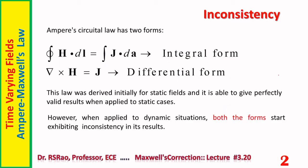Ampere's circular law is normally introduced to students when they study magnetic fields. Like several other laws, this law has both integral form and differential form. The integral form states that the MMF around a closed path equals the current passing through any surface enclosed by that path. H is magnetic field intensity, J is current density. Its differential form is curl H equal to J. The basic point is this law was initially derived for static fields, and when applied to static fields it gives perfectly valid, correct results.